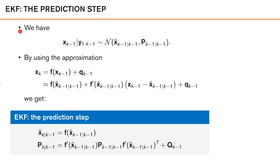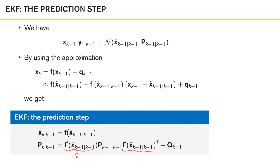Using this in our extended Kalman filter, we start with the prediction step, where we assume a Gaussian posterior from the previous time instance with mean x̂_{k-1|k-1} and covariance P_{k-1|k-1}. Linearizing our nonlinear motion model using a first-order Taylor expansion around the posterior mean gives us a linear approximation. The predicted mean x̂_{k|k-1} is found by propagating the posterior mean through the nonlinear function, and the predicted covariance is F̃ P_{k-1|k-1} F̃ᵀ + Q_{k-1}, where F̃ is the Jacobian matrix and Q_{k-1} is the process noise covariance. This is very similar to the prediction step in the standard Kalman filter.